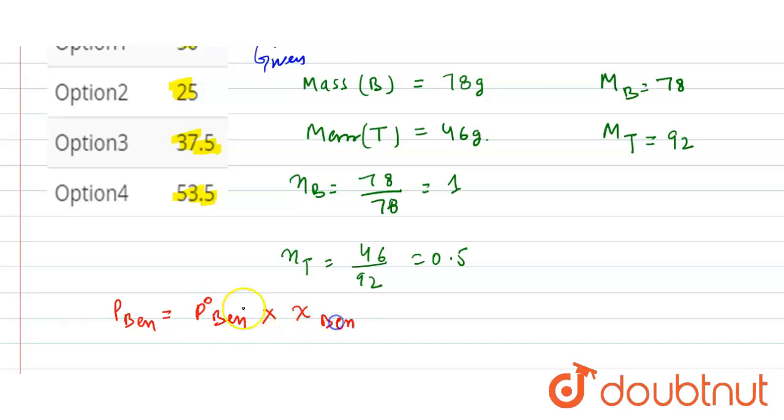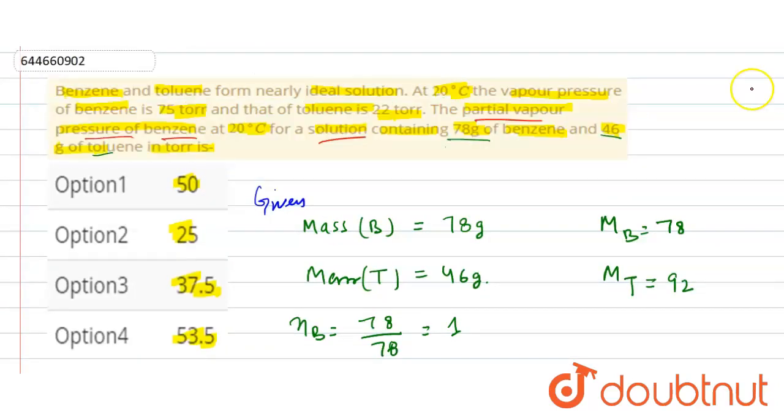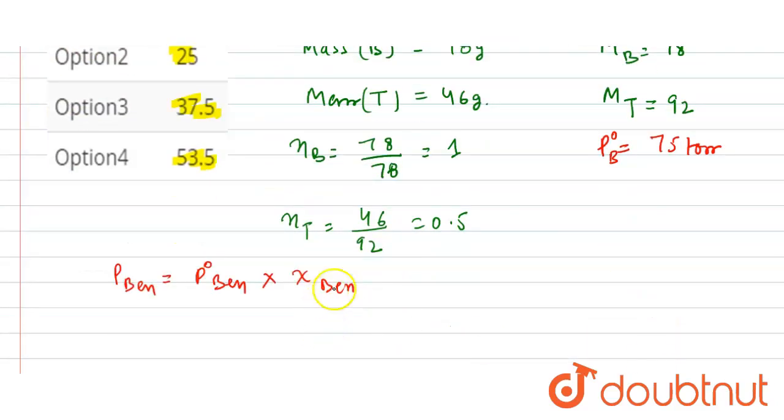Mole fraction of benzene. To calculate this, here the value of P naught we have given is 75 torr. P naught value we have given is 75 torr for benzene. So here we need to find the mole fraction. So the formula to calculate mole fraction is for benzene: